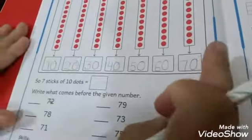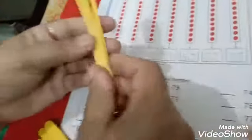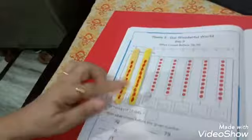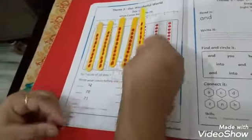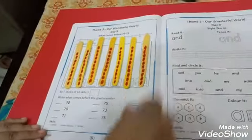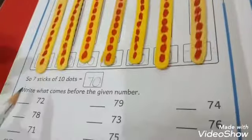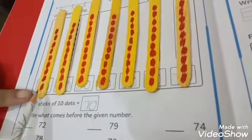So, seven sticks of 10 dots. These are seven sticks of 10 dots. 1, 2, 3, 4, 5, 6, and 7. So seven sticks of 10 dots means 70. ये ice cream की 7 sticks means 7 tenths means 70. और हमेशा यह ध्यान रखे कि dots नीचे से ऊपर की ओर ले जाने हैं। ऊपर से नीचे की ओर नहीं ले जाने। नीचे से ऊपर की ओर।